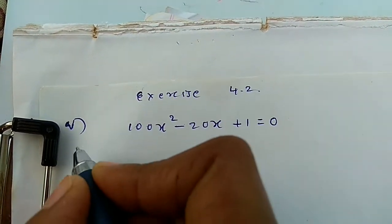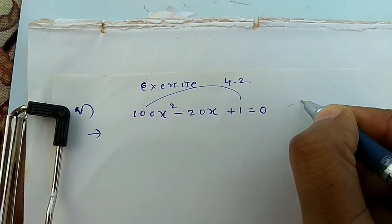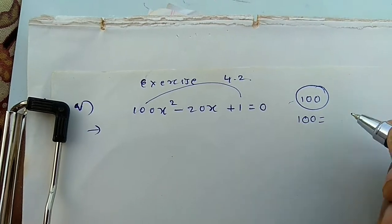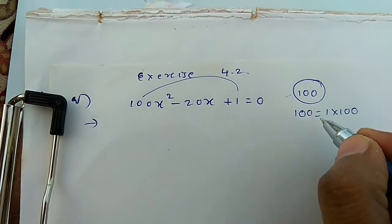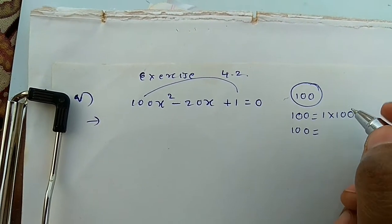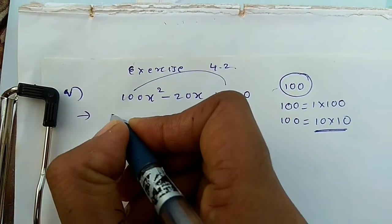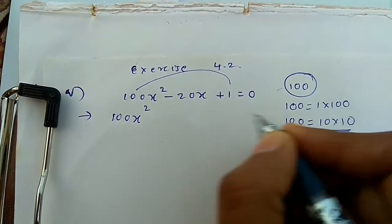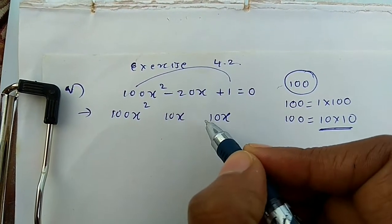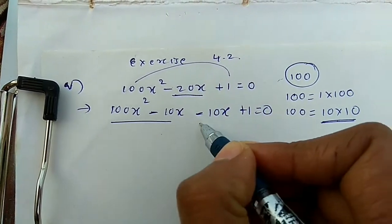Exercise 4.2 fifth example: 100x² − 20x + 1 = 0. Multiply a into c: 100 × 1 = 100. Find factors of 100: 1 and 100 — adding won't give 20. Try 10 and 10: adding gives 20, so we use these two. Since the middle term has minus sign, both terms will have minus sign: 100x² − 10x − 10x + 1 = 0.